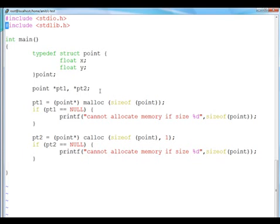After execution of this statement, pt1 will be assigned the pointer which points to the memory location of size point. It is always a good programming practice to check whether the allocation has been done properly or not. Proper amount of memory was present or not. If the amount of memory which is required to be allocated is not present, malloc will return a null value. So pt1 will be assigned value null. Here I am checking if pt1 is equal to null, I am printing cannot allocate memory of size sizeof point. So if the malloc fails, this log will be printed.